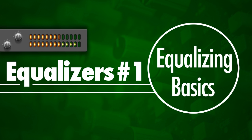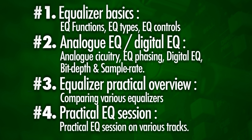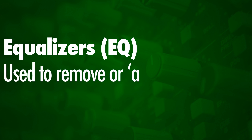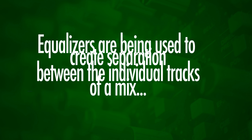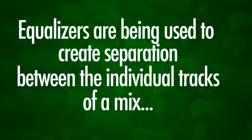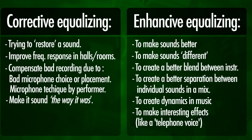Hey, what's up, it's Wick for Wikimedia Tutorials, and today I'm gonna talk about equalizers. This is the first of a four-part tutorial about equalizers. An equalizer or EQ is used to remove or add frequencies of a signal. They're used to create separation between the individual tracks of a mix. We've got two main reasons for equalizing: corrective equalizing and enhanced equalizing. Equalizing may sound complex, but today we're gonna learn it's really not that complicated.